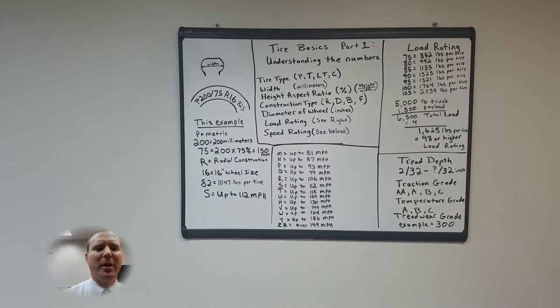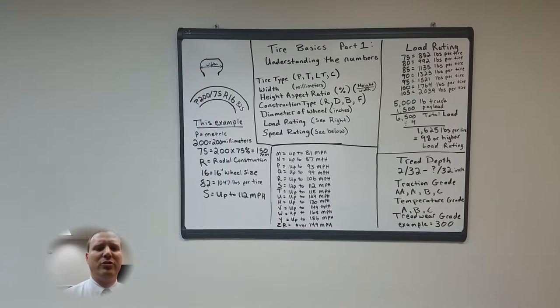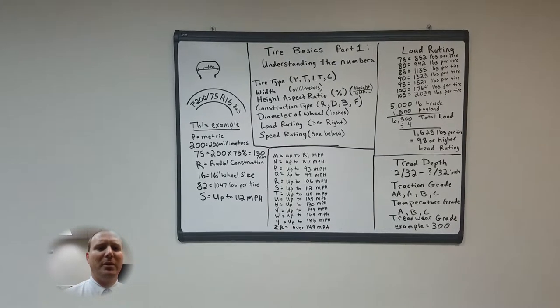Your speed ratings range from 81 to 186 miles per hour and then there's a special tire rating for over 149 miles per hour.